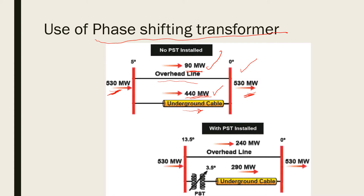We solve this problem by connecting the PST, that is the phase shifting transformer, in series with the line where the reactance is low. After connecting the PST, we can see the power flow is 240 megawatt here and 290 megawatt here — it is almost manageable. By adjusting the angle precisely, we can make an equal amount of power flow in both lines.